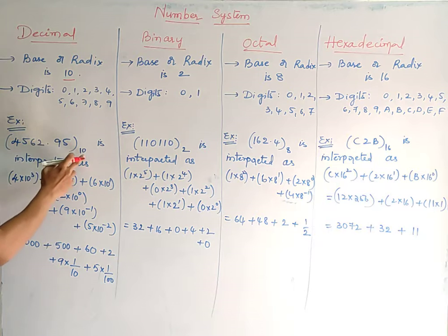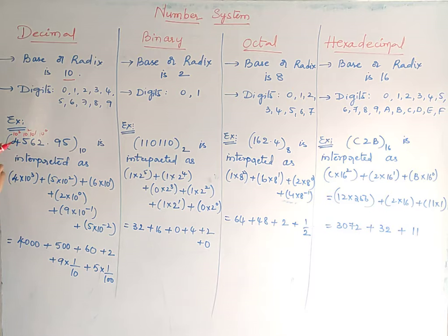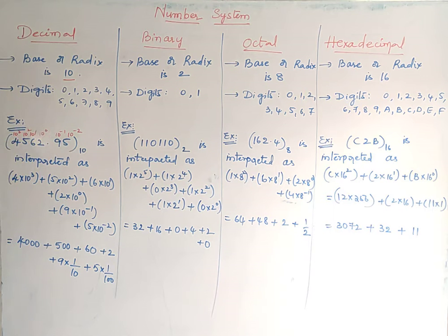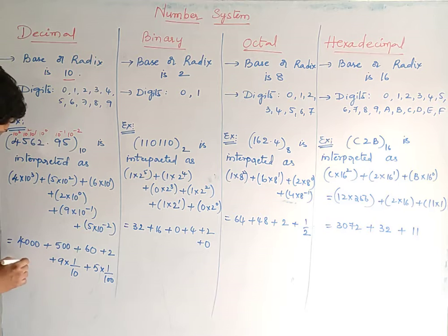Suppose 4562.95 to the base 10 — this particular number is in the decimal number system. We can interpret it: this is 10 power 0, 10 power 1, 10 power 2, 10 power 3. So this number is: 4 × 10³ + 5 × 10² + 6 × 10¹ + 2 × 10⁰ + 9 × 10⁻¹ + 5 × 10⁻². This is the radix point, also called the base point. We can interpret everything in this particular number system.